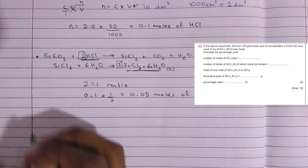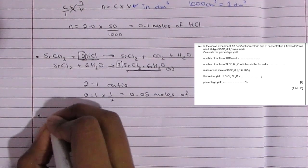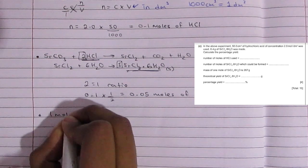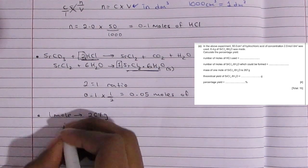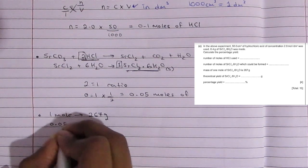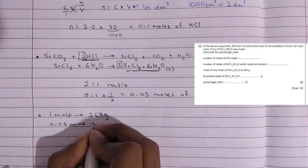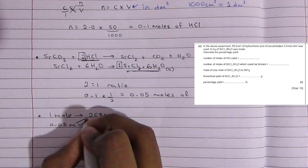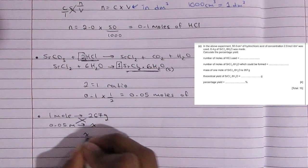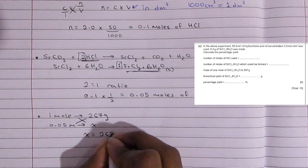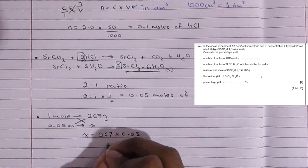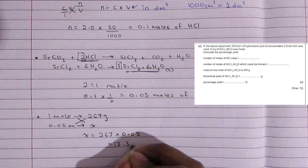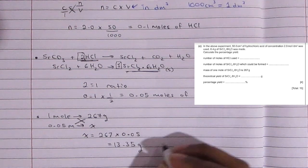Okay, so for the third part we're told to find the theoretical yield, so how many grams are we expecting to get. They told us that one mole is 267 grams, and we found out that in this experiment we only use 0.05 moles of the strontium chloride hexahydrate, so how many grams is that? We're going to cross multiply, so X times 1 is X, 267 times 0.05 that will give you 13.35 grams.